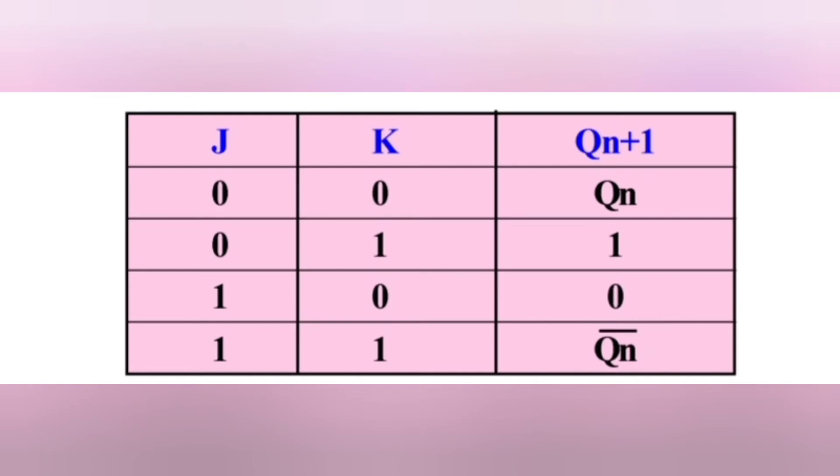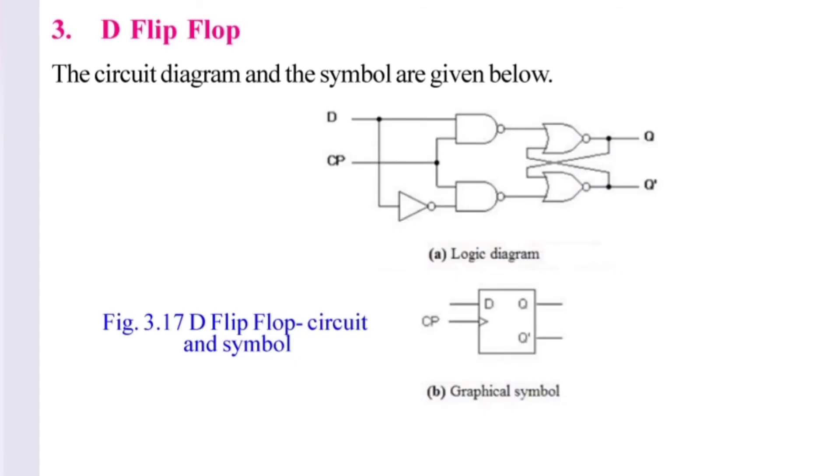In this case, when J equals 1 and K equals 1, this is the toggle state of the JK flip-flop. Next is the D flip-flop.